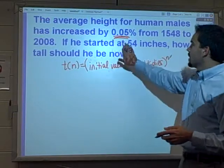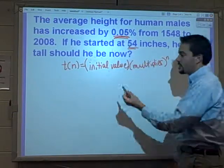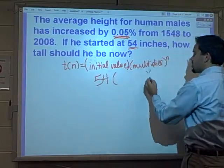So in this one, we're looking at 54 inches. 54 is what we started out at for height, times their multiplier.